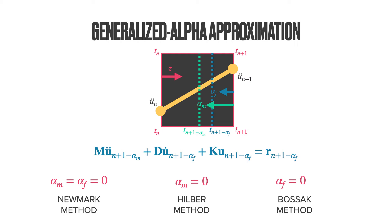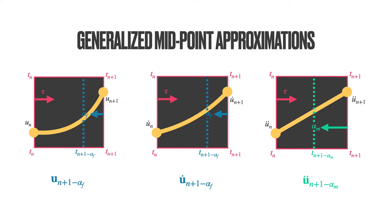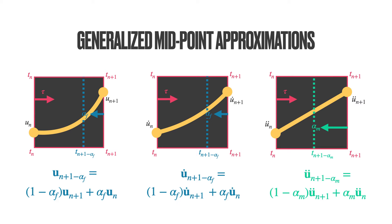You might be wondering why we are violating the balance equation — it might look strange. Actually, the structural response is anyway smeared between T_n and T_{n+1}. In reality, the time between T_n and T_{n+1} does not exist; our simulations just jump from state T_n to T_{n+1}. Now let us look at the displacement, velocity, and the acceleration. We can write these quantities, defined between T_n and T_{n+1}, in terms of the values at n and n+1 using a midpoint approximation. By introducing these approximations, we can move anywhere in between the time step using the parameters alpha-m and alpha-f.